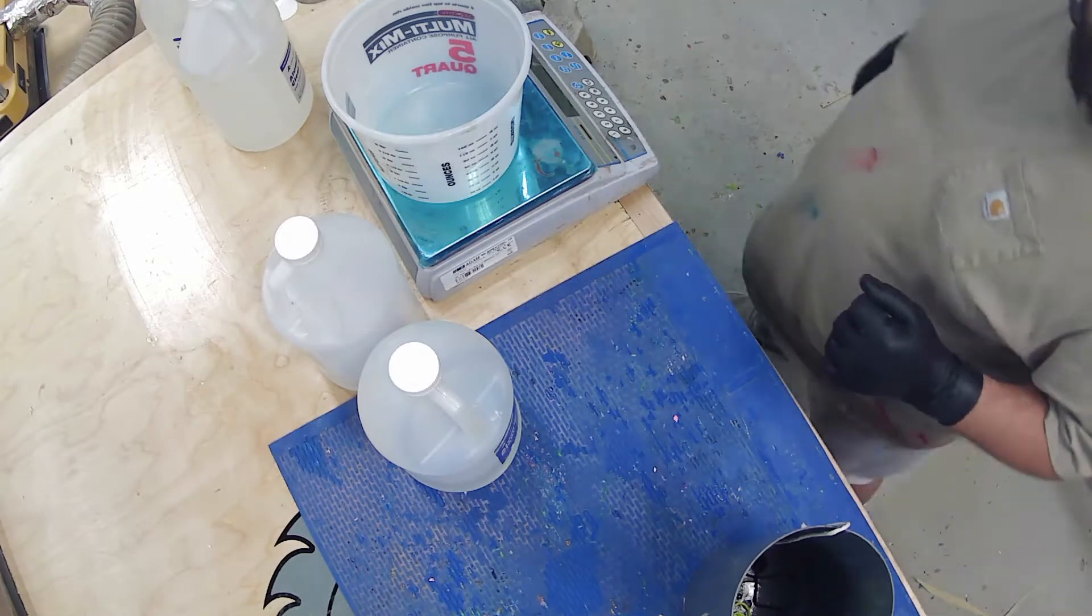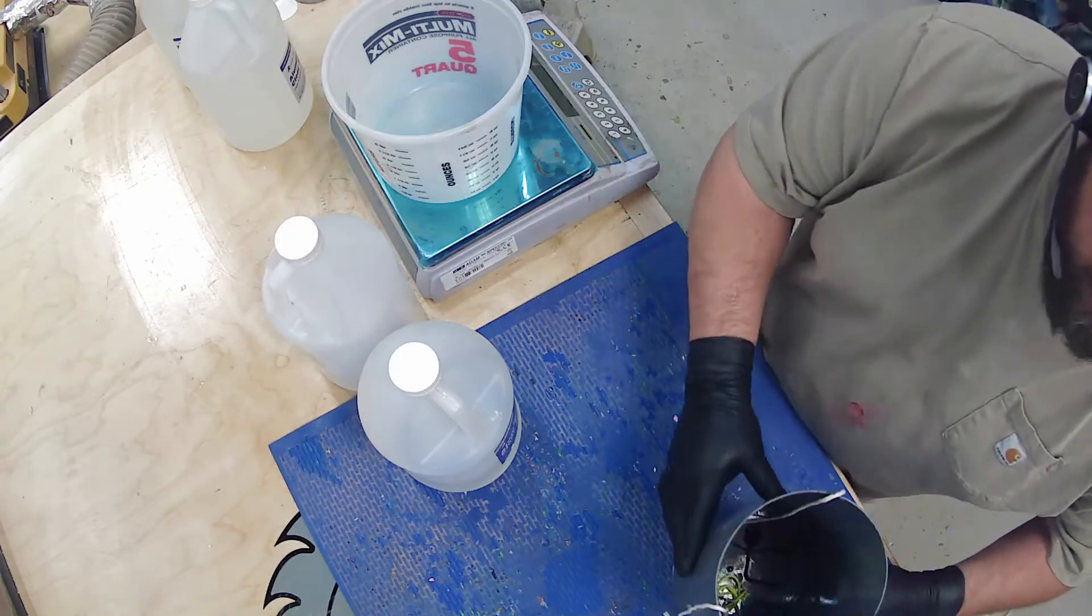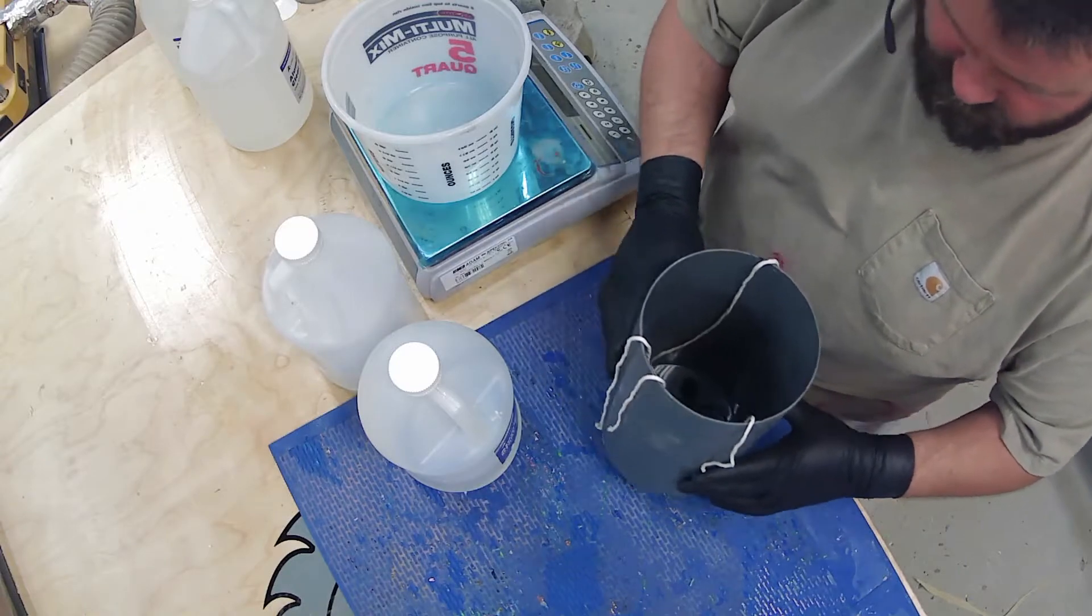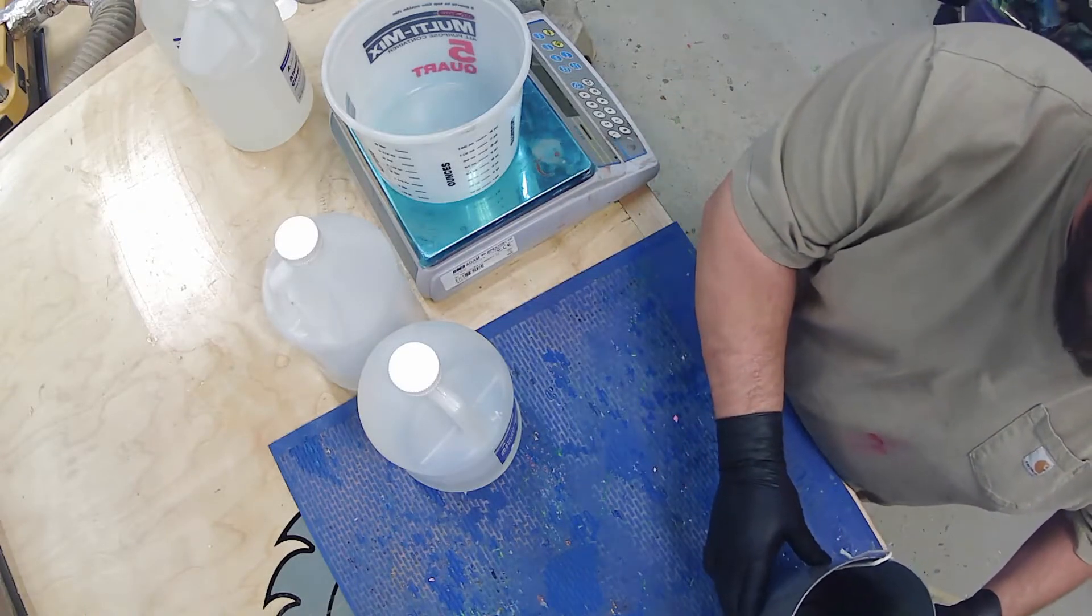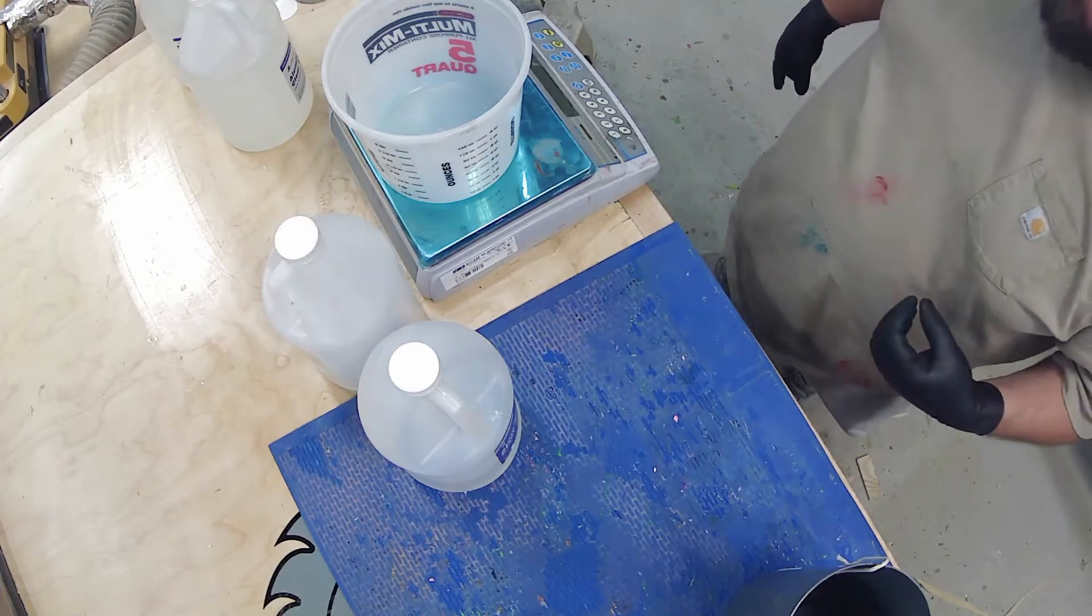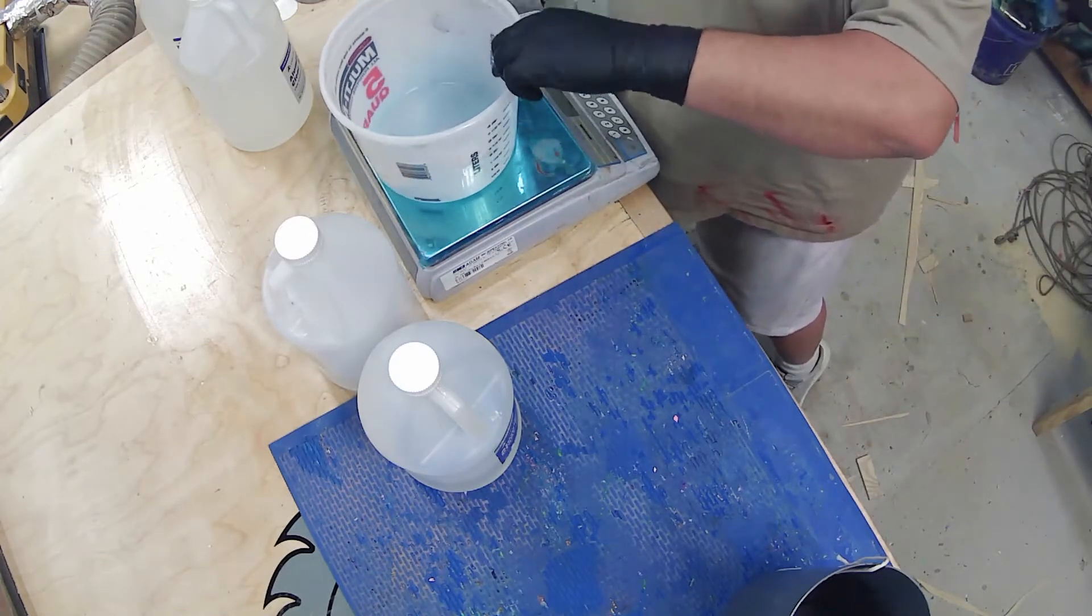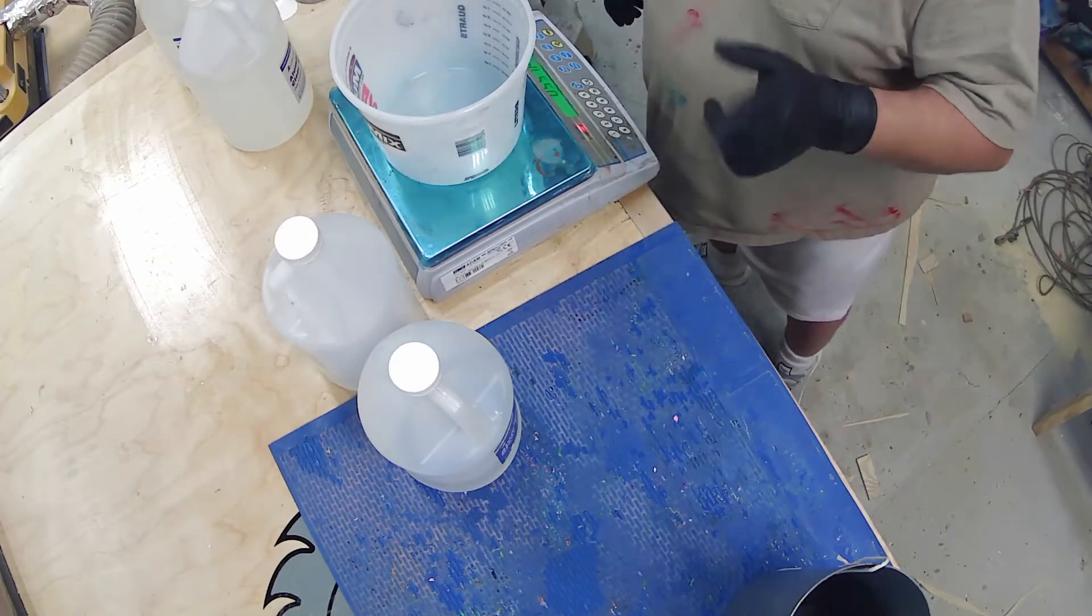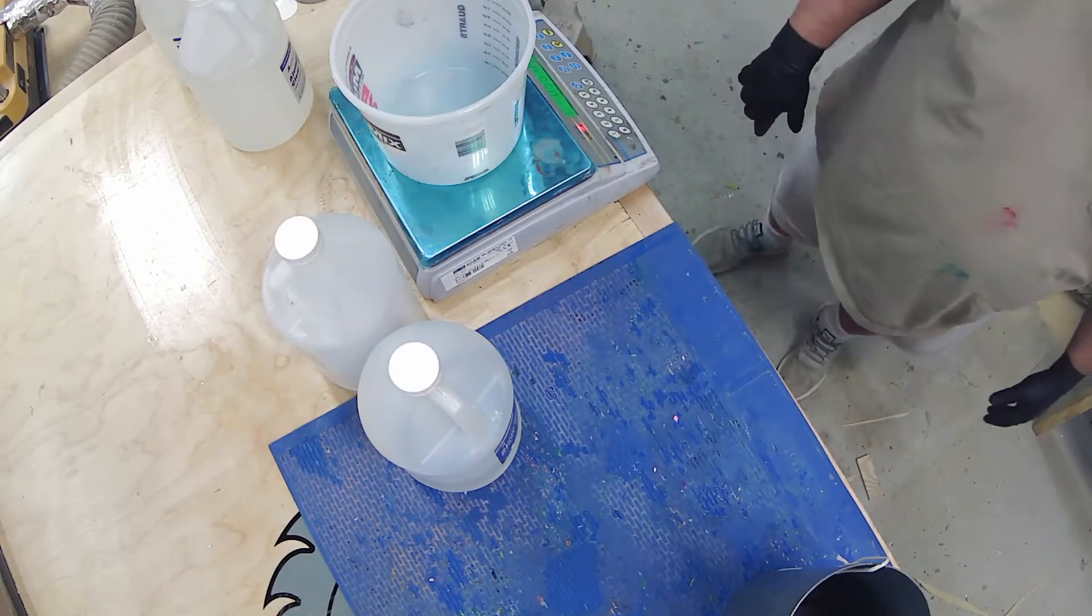All right, so I've got these strings all put inside here. It's just twine. That's what I used. So, to fill this container, we're looking at about a 4,000, 4,500 gram pour. We're going to use liquid diamonds clear slow.